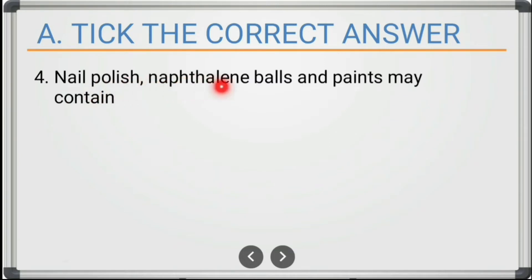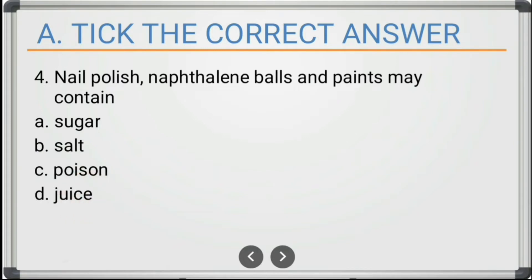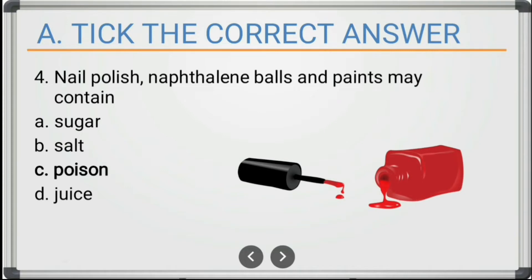Next question: nail polish, naphthalene balls, and paints may contain — sugar, salt, poison, or juice. The correct answer is poison. We should always keep small children away from these chemicals.